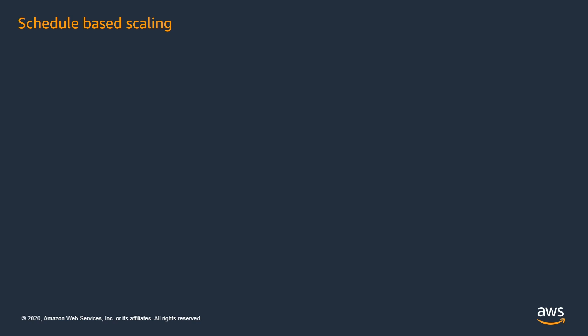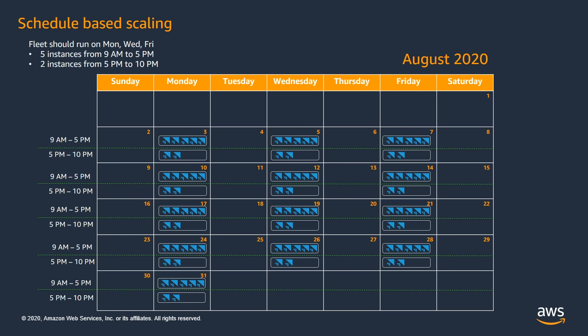You can also use schedule-based scaling that schedules the fleet capacity based on cron jobs. For example, you can schedule a fleet to run only on Monday, Wednesday, and Friday with a capacity of 5 instances from 9 am to 5 pm, and a capacity of 2 instances from 5 pm to 10 pm. This is how your fleet size looks with 5 instances from 9 am to 5 pm, whereas from 5 pm to 10 pm your fleet runs only 2 instances. This is based on the cron job you specify for your fleet. You can also schedule this for a whole month.